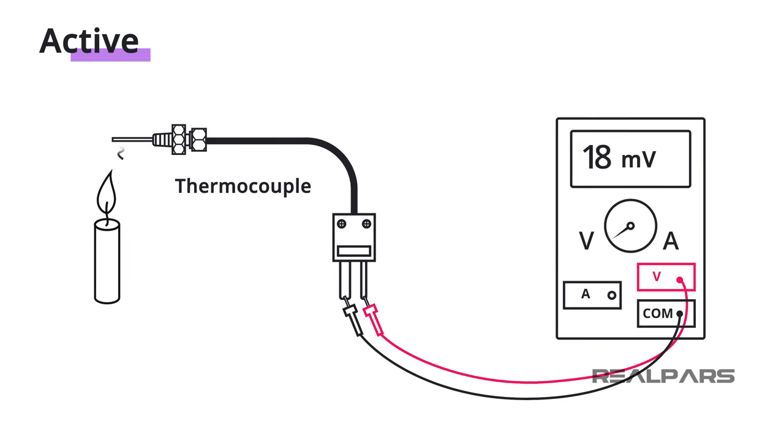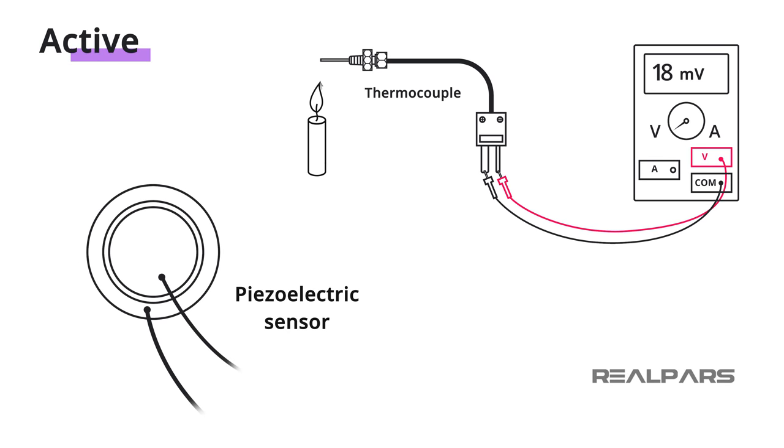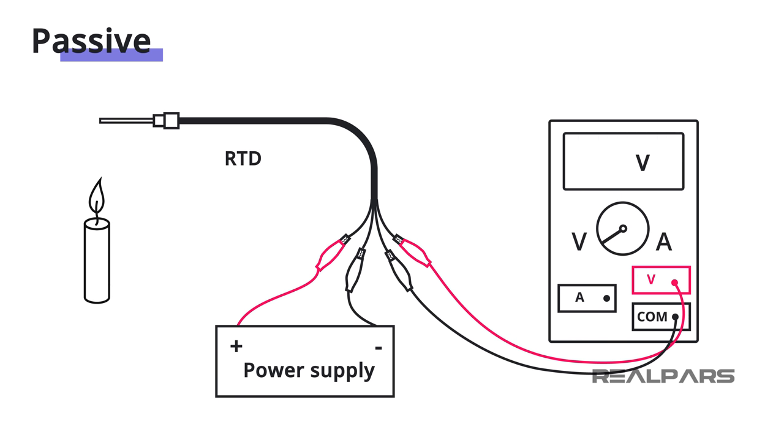Another example of an active sensor is a piezoelectric sensor. A Resistance Temperature Detector, or RTD, is a passive sensor.